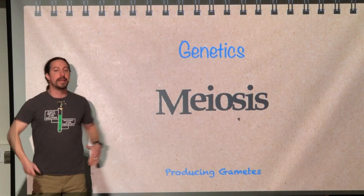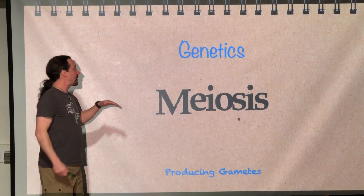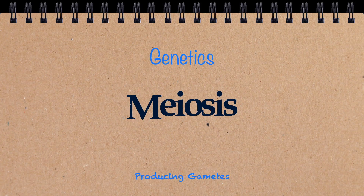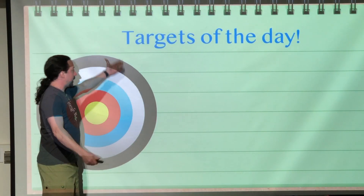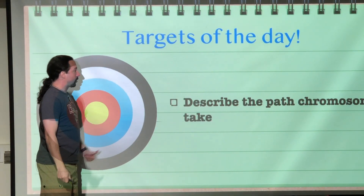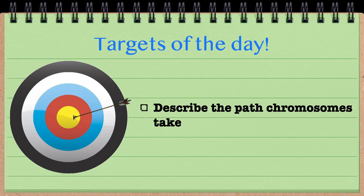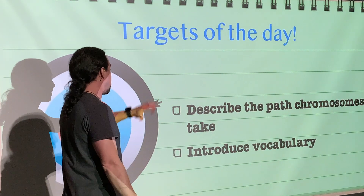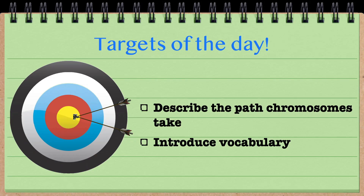Hello and welcome to this next episode in our unit on genetics. We are looking at meiosis, which is the formation of gametes. Our goal is describing the path that chromosomes are going to take — how do chromosomes get separated in this process of meiosis? We're also going to introduce a little bit of vocabulary.